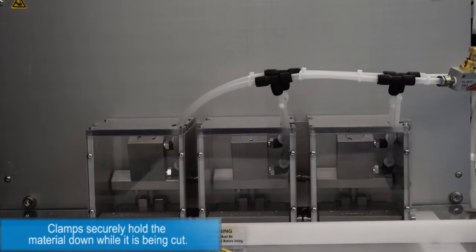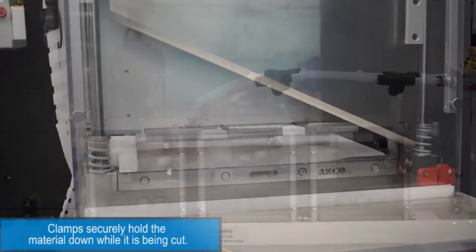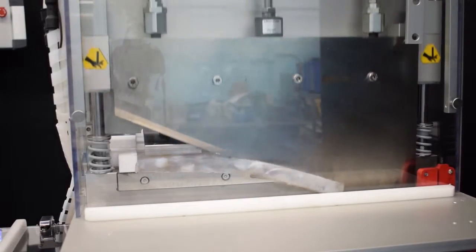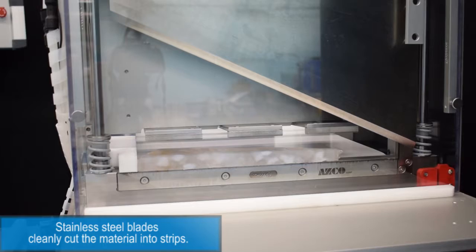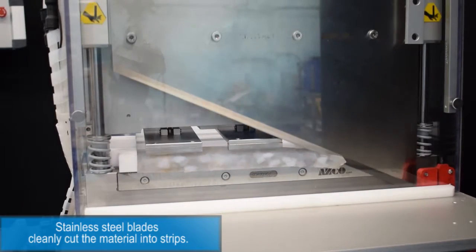Clamps securely hold the material down while it's being cut. Stainless steel blades cleanly cut the material into strips.